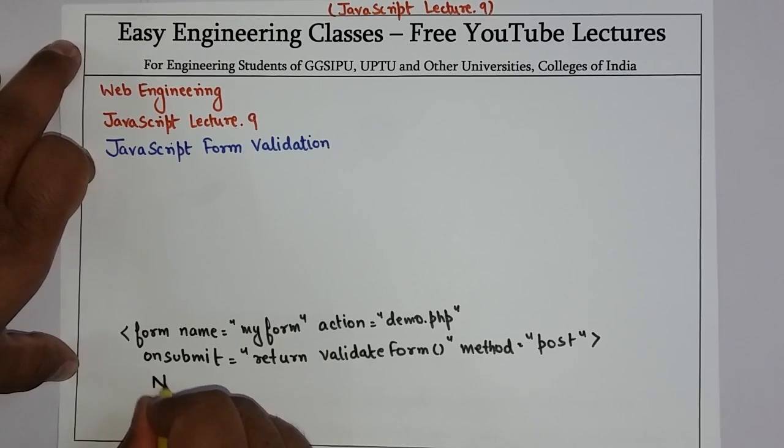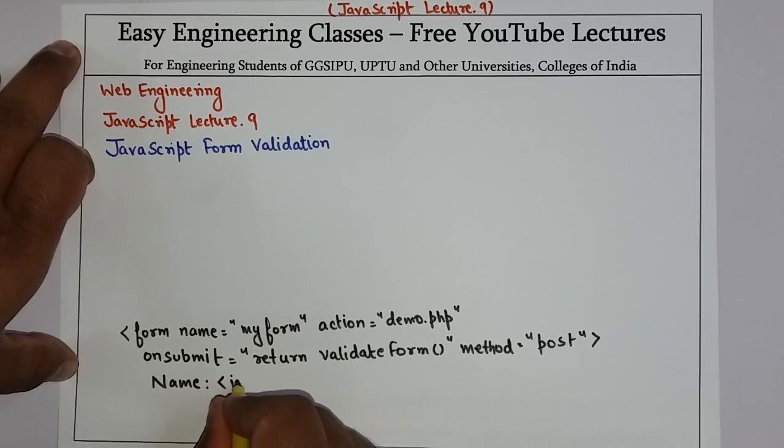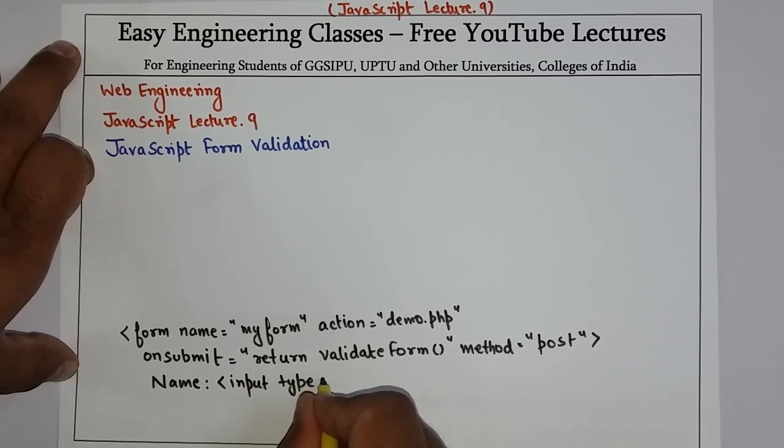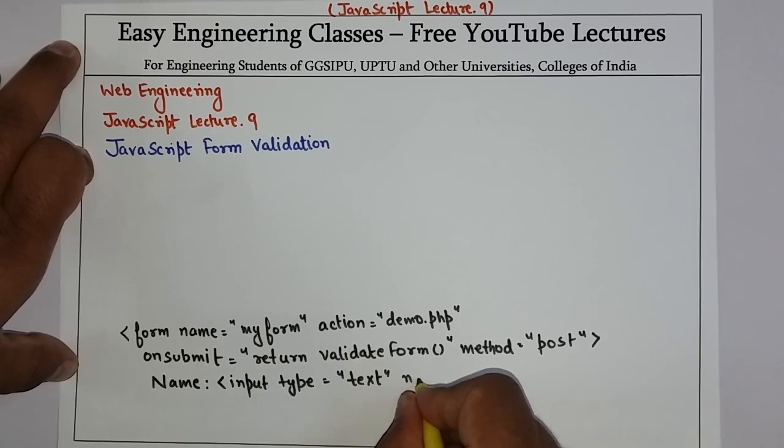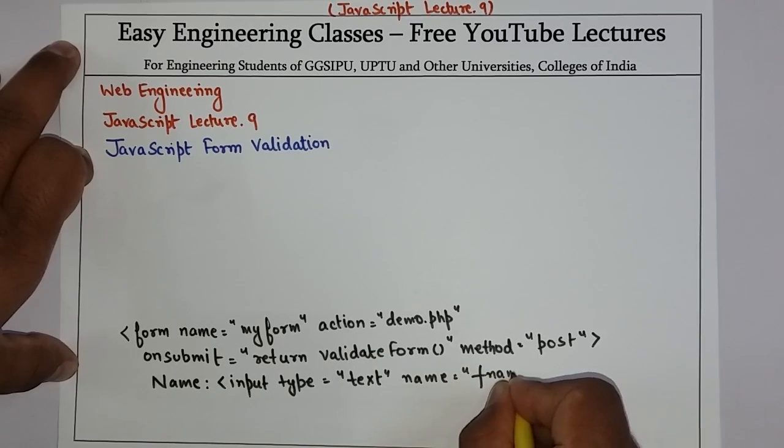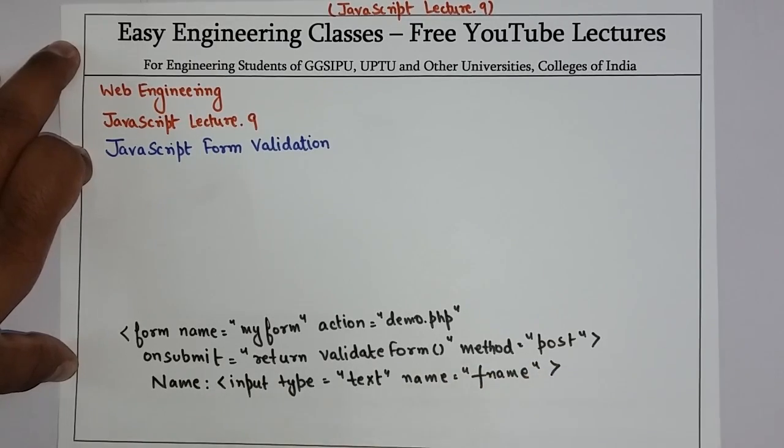Then create one field. Input type is text. So we have created a text field, and the name of that text field is fname, first name.